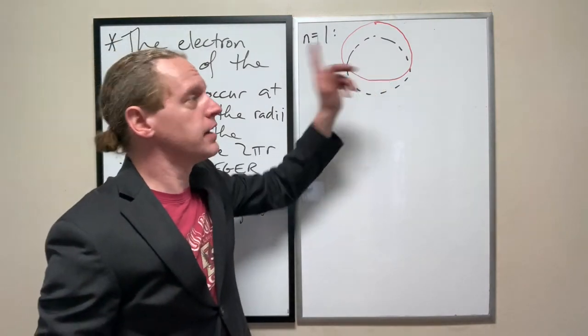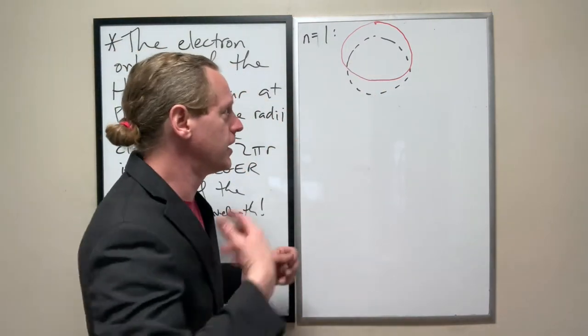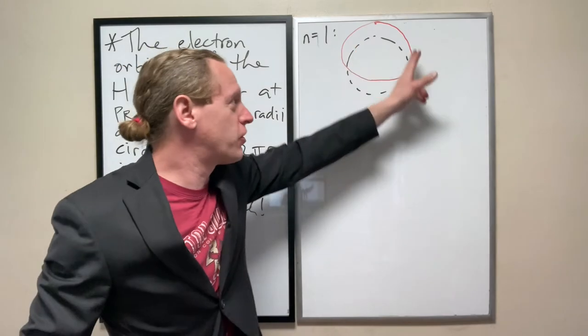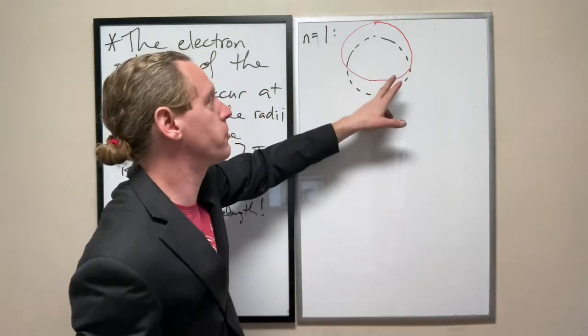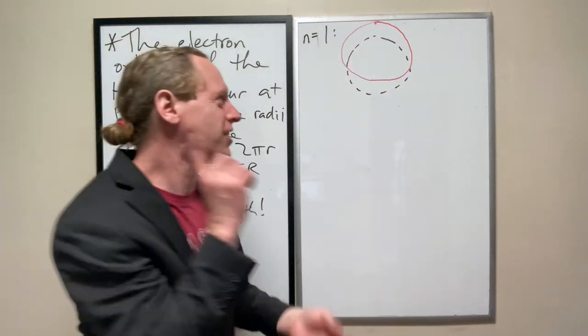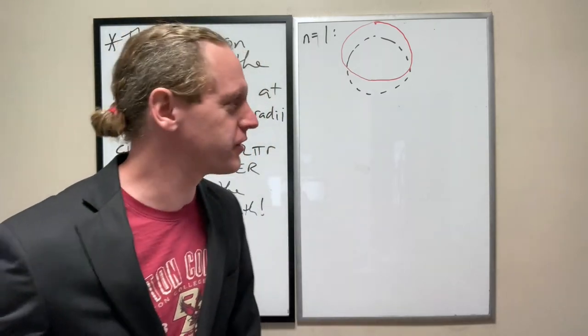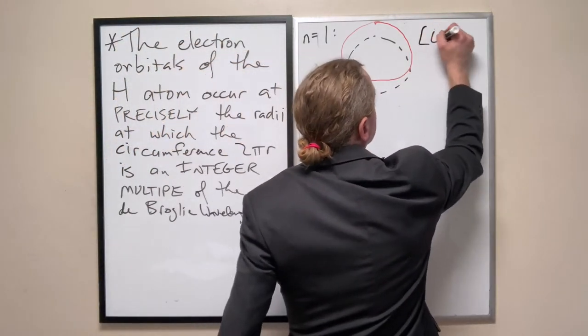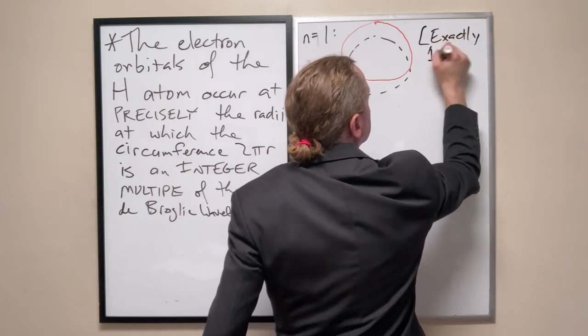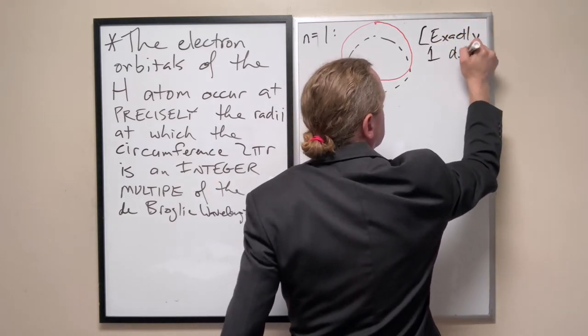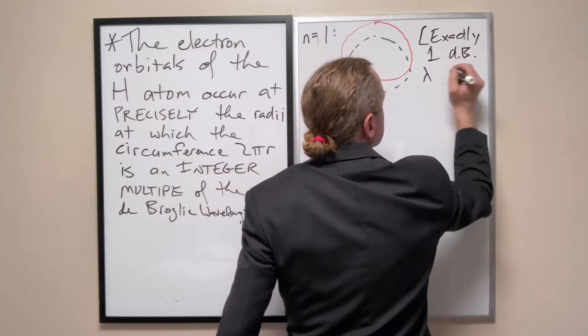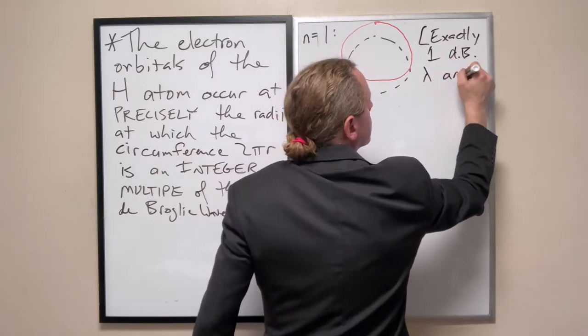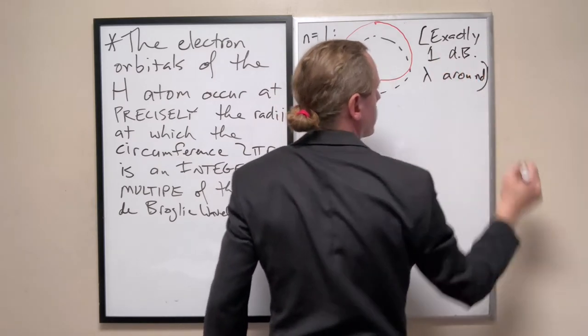This is not the picture of the actual physical path the electron takes again, but it's the representation of the phase in a circle. This starts to look a lot cooler once we get to n equals 2 and 3. In this case, exactly one de Broglie wavelength around it.